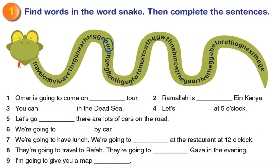Exercise 1: Find words in the word snake, then complete the sentences. Look at the word snake — we are going to search for the new words we studied in this unit. For example, there is a circle around the word 'hour'. Now you have 5 minutes to find the words.